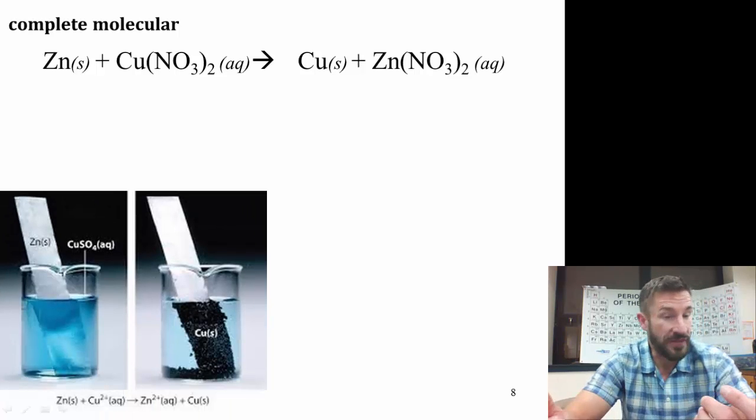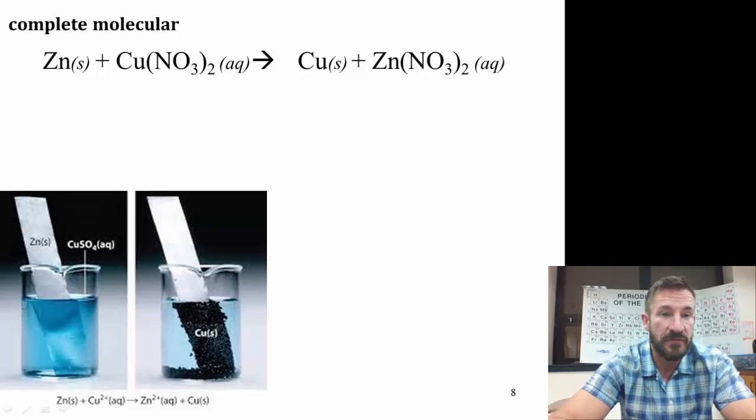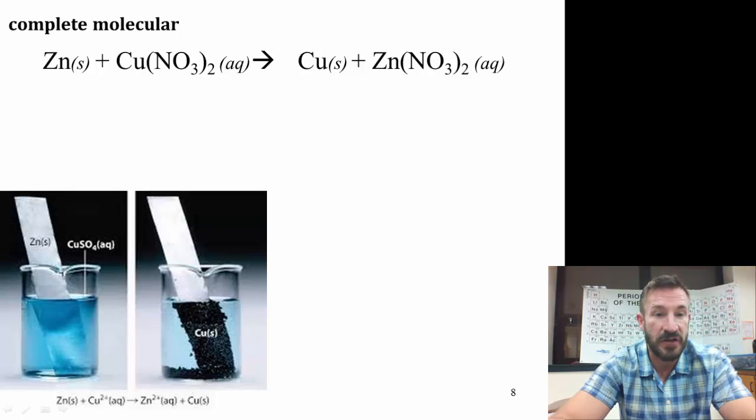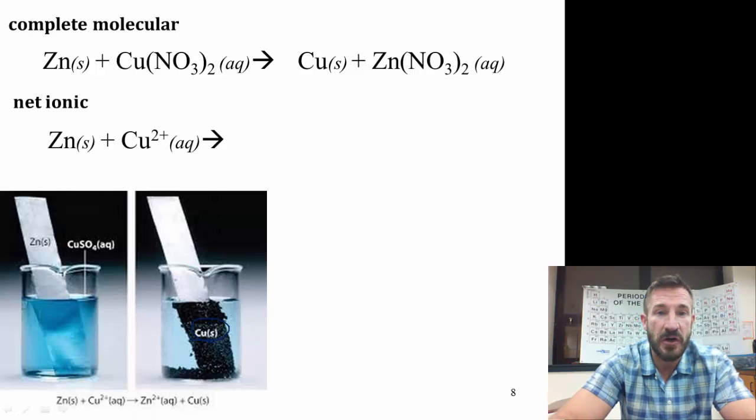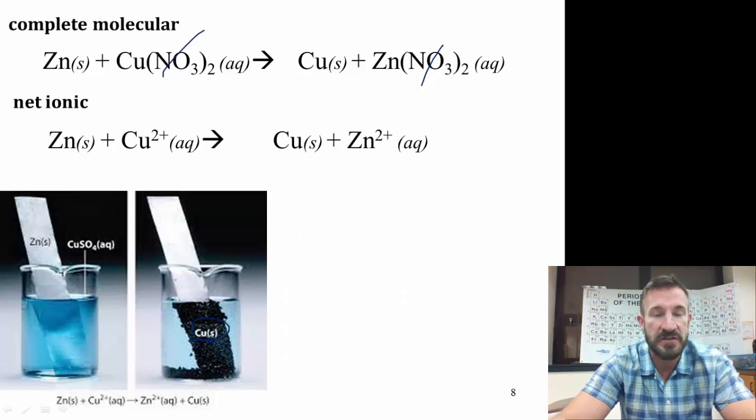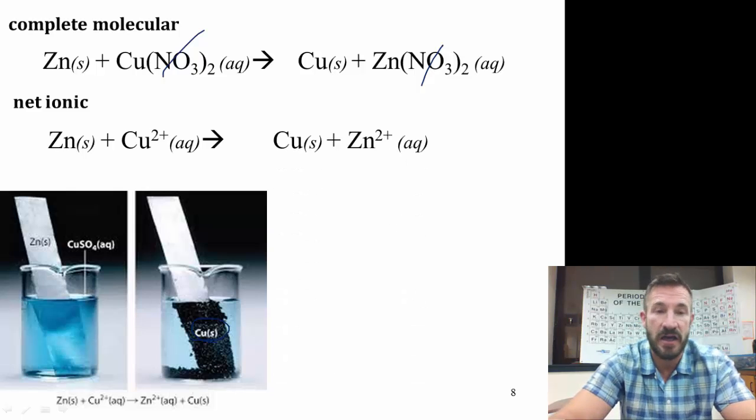Now if you were to write a net ionic for this, now here also we have what this would look like. Here we have the very beginning of the reaction, we put zinc in the copper solution. At the end, we have the copper being formed. Let's look at the net ionic for this. The net ionic would be zinc. And notice the spectator ion for this is a nitrate. So if you cross out the nitrate, we need to put the charge on the copper.